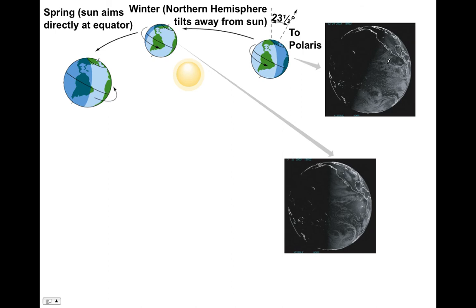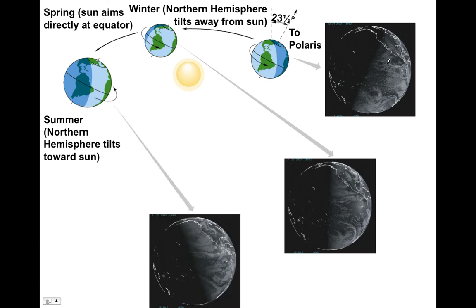As Earth goes further through its orbit, the northern hemisphere becomes tilted toward the sun, absorbing more energy per unit area than the southern hemisphere. The opposite is now true compared to winter — the northern hemisphere receives more solar energy, and the most direct energy from the sun strikes just in the northern hemisphere. The maximal energy per unit area absorbed is occurring in the northern hemisphere — that's our summer.